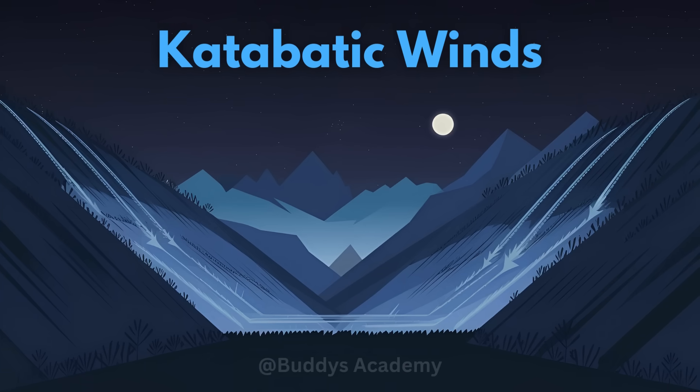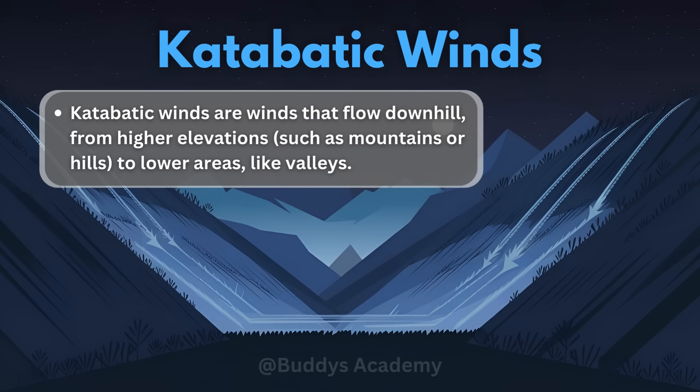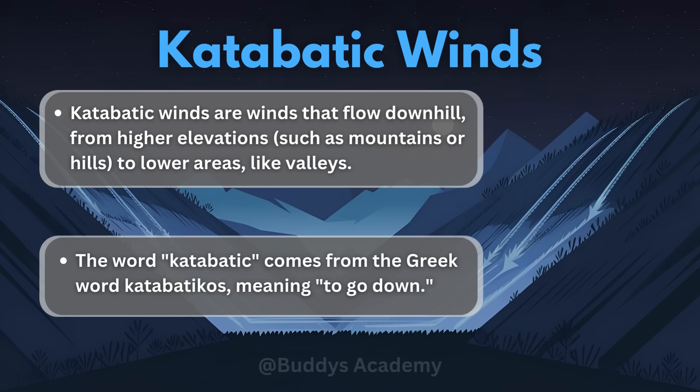So let's start off with katabatic winds. Katabatic winds are winds that flow downhill from higher elevations such as mountains or hills to lower areas like valleys. The word katabatic comes from the Greek word katabaticos meaning to go down. This definition can be used in your exams, so please feel free to take a screenshot and keep it for when you are studying.